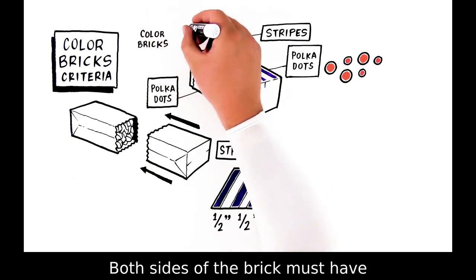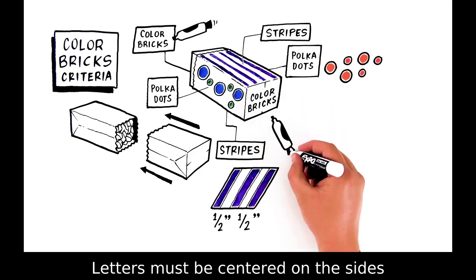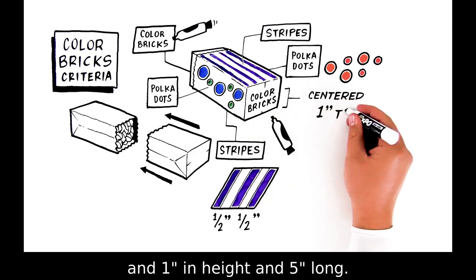Both sides of the brick must have color bricks written in black marker. Letters must be centered on the sides and one inch in height and five inches long.